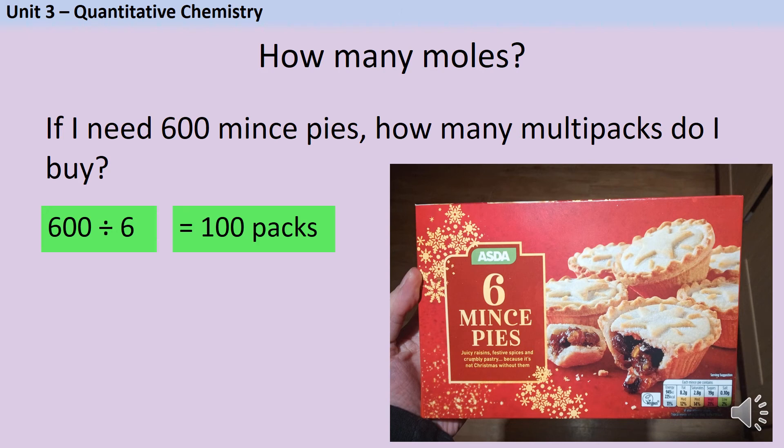This is the same process that we're going to go through working out how many moles there are if we know the total number of particles. So 600 was the total and 6 was the number contained in one multipack, which is equivalent to Avogadro's number. So I'm going to take the total number of particles and divide it by Avogadro's number.